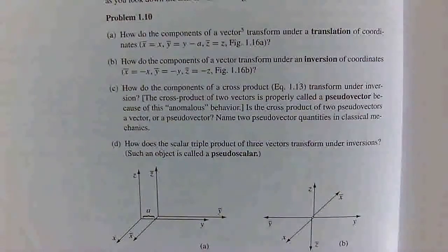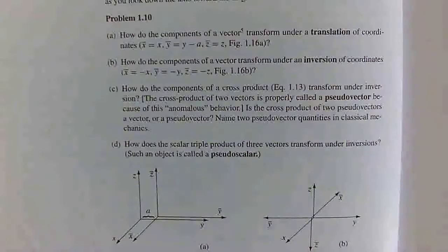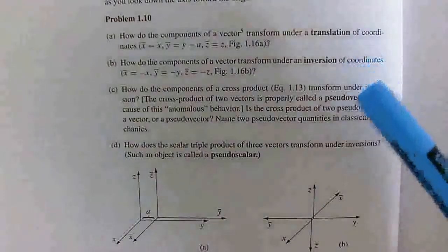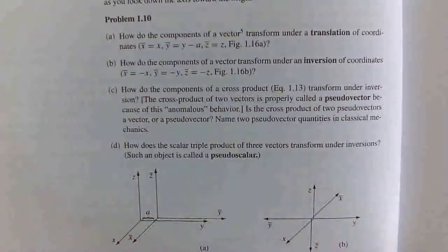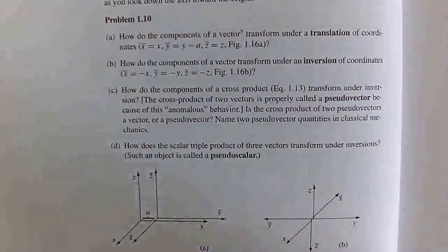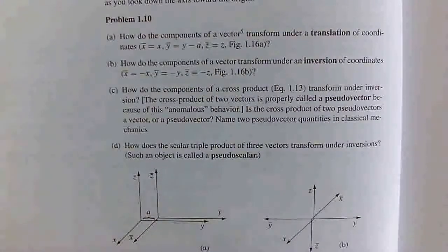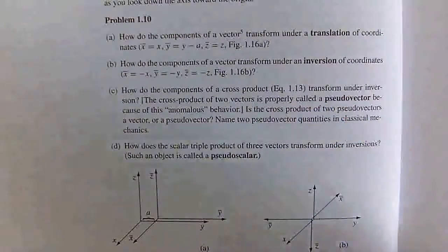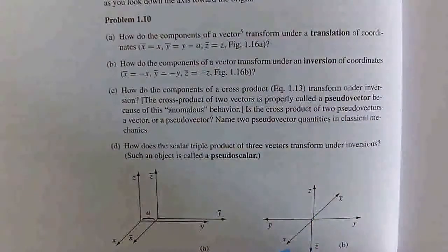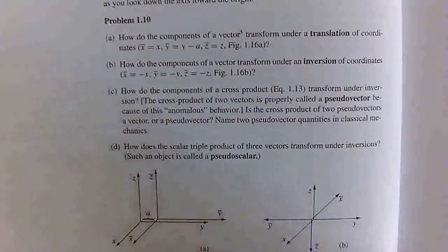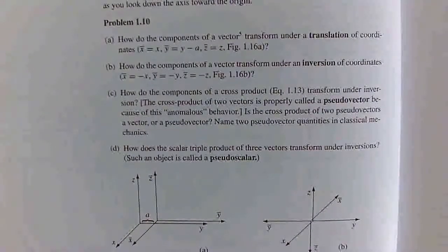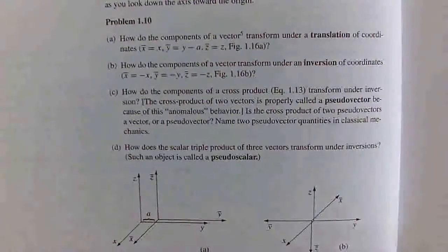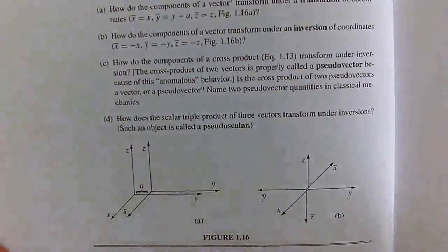Hello everyone, welcome to this video where we're going to be solving parts A, B, C and D from Griffith's Introduction to Electrodynamics, Problem 1.10. This is about how the components of vectors, cross-products and scalar triple products transform under translations and inversions of the coordinate system.